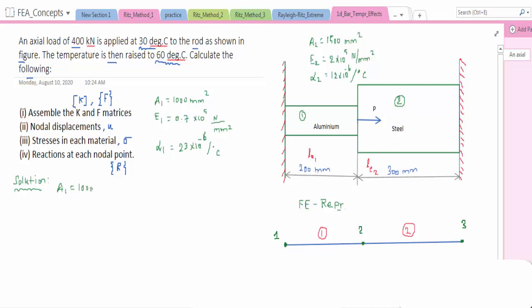The given is A1 is 1000 mm square, A2 is 1500 mm square, E1 is 0.7 x 10^5 N/mm^2, E2 that is for steel 2 x 10^5 N/mm^2. Alpha is 23 x 10^-6 per degree Celsius for aluminum, 12 x 10^-6 per degree Celsius is for steel.